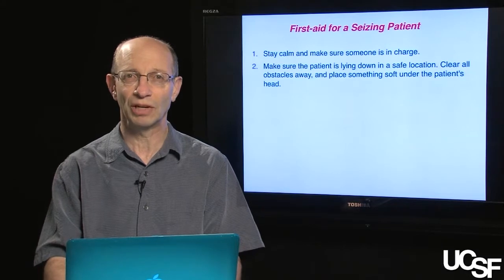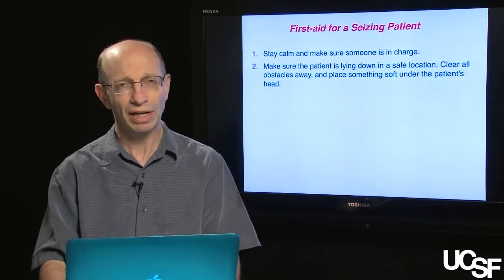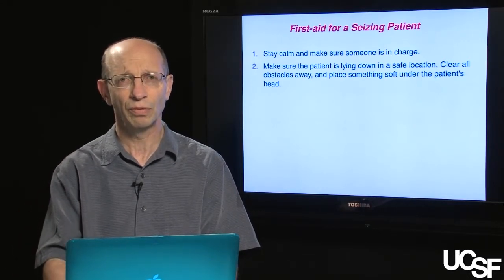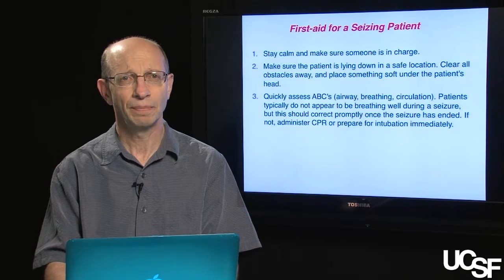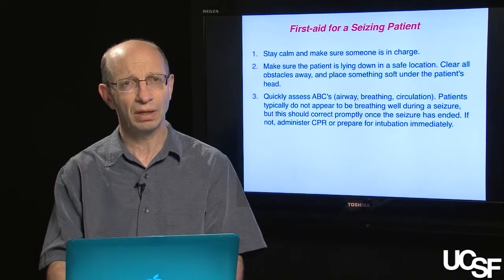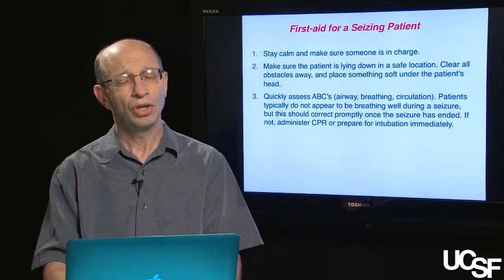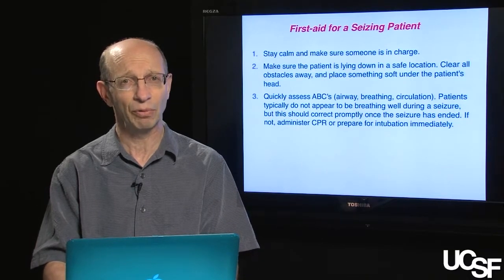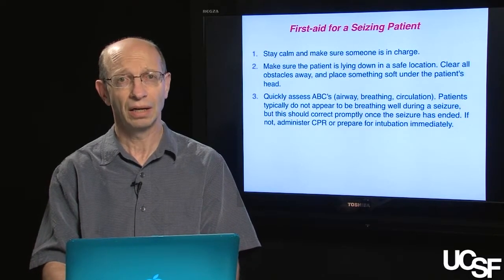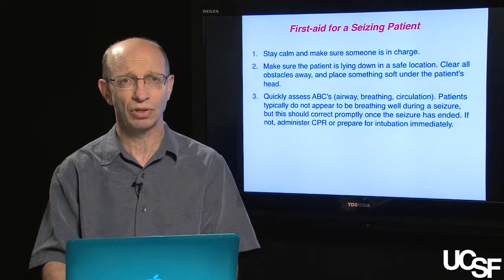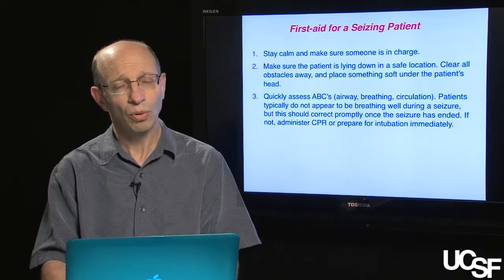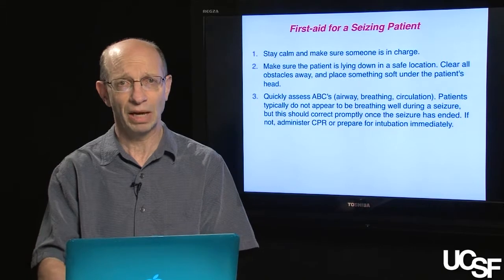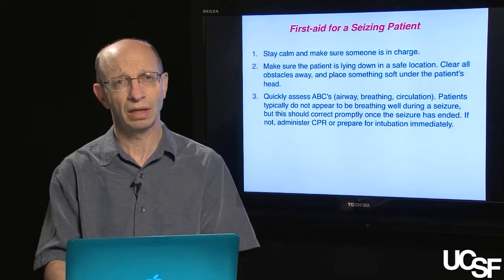Make sure that the patient is lying down in a safe location. Clear anything away that the person might hurt themselves with from the tonic or clonic movements, and put something soft under the patient's head. Do a quick assessment of airway, breathing, and circulation. If someone's having a full generalized tonic-clonic seizure, in the midst of it they may not be breathing very well and may turn cyanotic. But once the seizure has ended, respirations almost always return promptly. If not, consider administering CPR, and intubation will be needed once paramedics arrive.